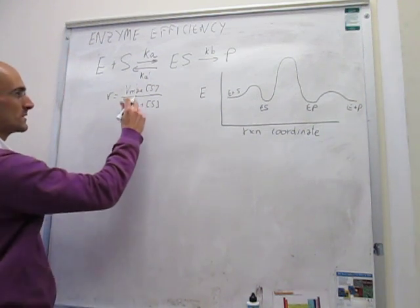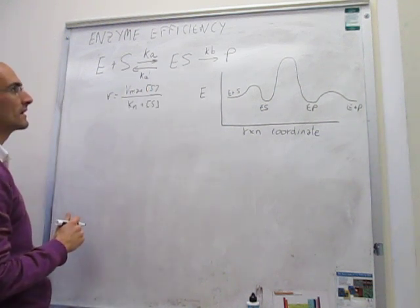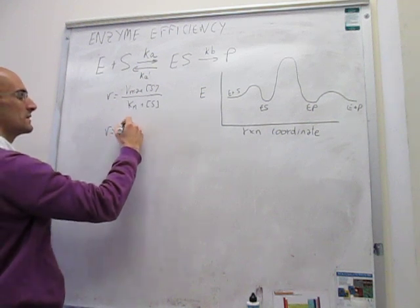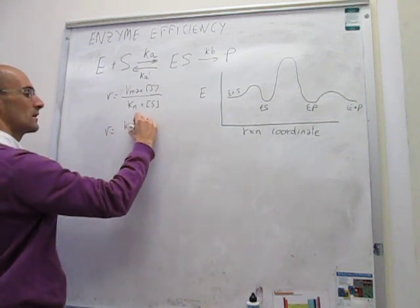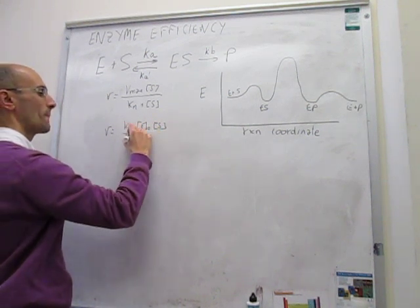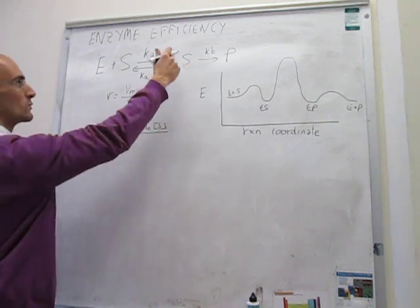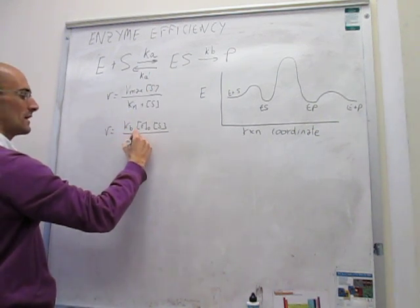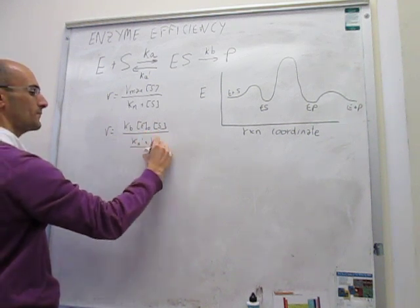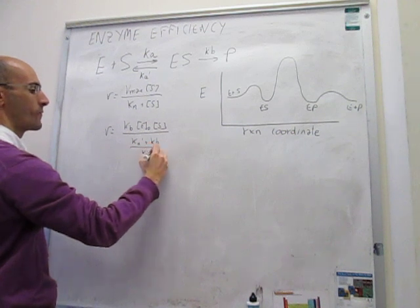We're actually now ready to spell out what Vmax and Km are in terms of kb, ka, and ka prime. So remember that Vmax equals k sub b, concentration of enzyme at time zero, concentration of substrate, and then k sub m was actually a relationship between these three rate constants, which was k sub a prime plus k sub b over k sub a.